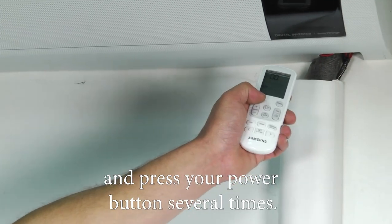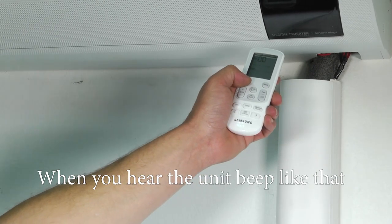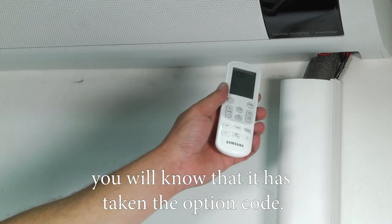you'll point your remote at the unit and press your power button several times. When you hear the unit beep like that, you'll know that it's taken the option code.